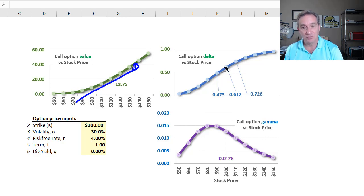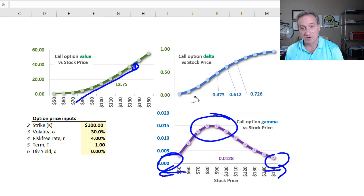Option gamma is the rate of change of the delta. When the gamma is high, the delta is changing quickly and a delta hedge is fragile. When the gamma is low, that is to say when the option is deeply out of the money or deeply in the money with gamma approaching zero, the delta is not changing very quickly and our delta hedge is more robust.